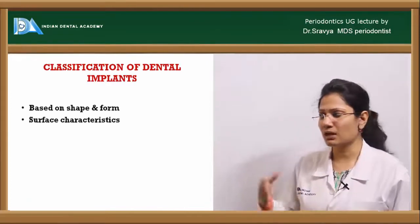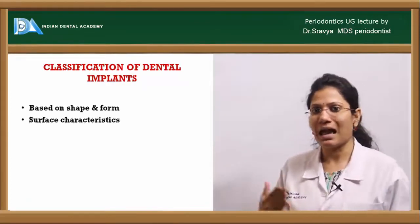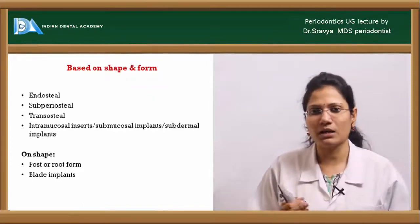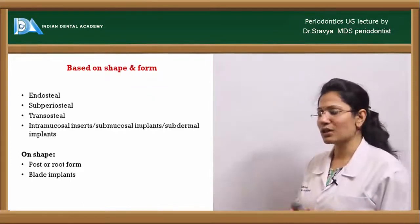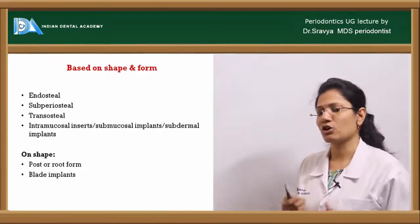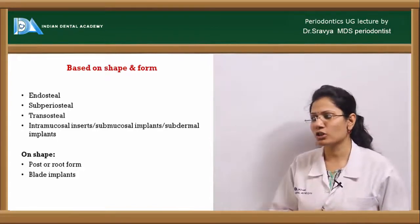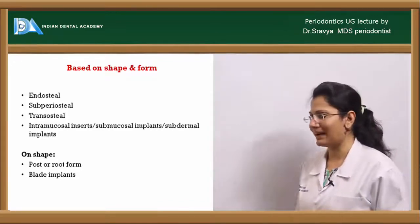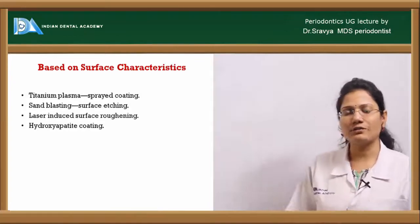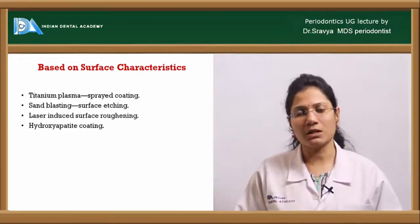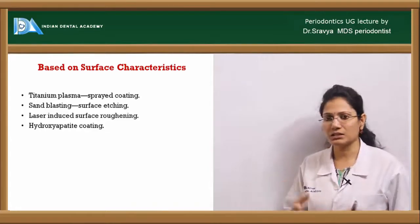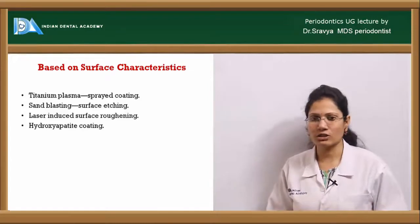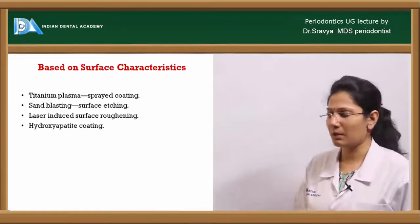Dental implants can be classified based on shape, form, and surface characteristics. Based on shape and form, you have endosteal implants, subperiosteal implants, transosteal, and intramucosal or submucosal inserts. Based on shape, they can be root form implants or bladed implants. Based on surface characteristics, you have plasma sprayed, titanium plasma sprayed (sandblasting), laser-induced surface roughening, and hydroxyapatite-coated titanium implants.